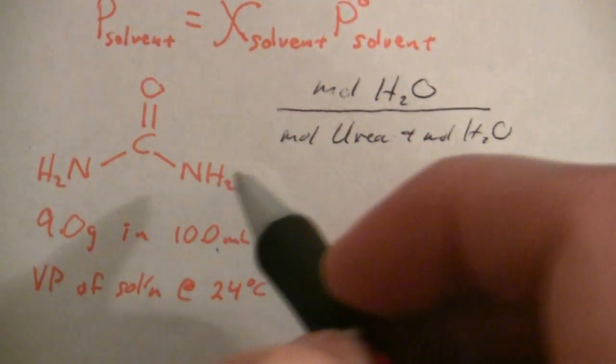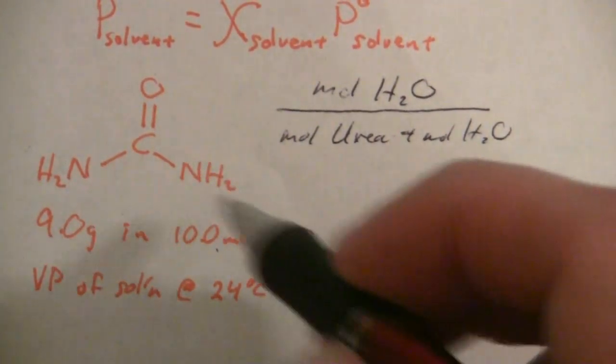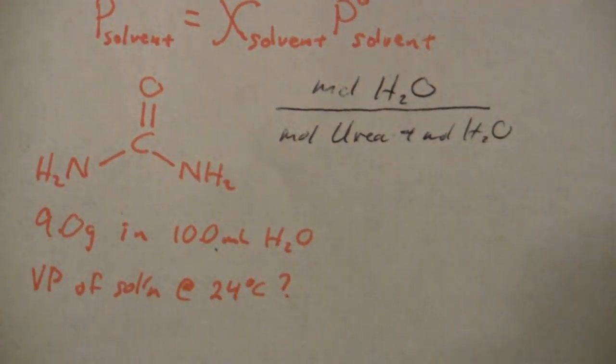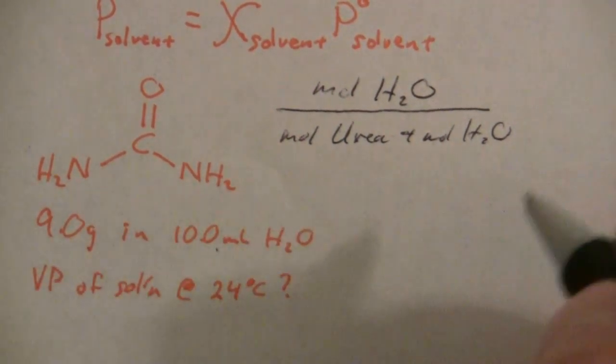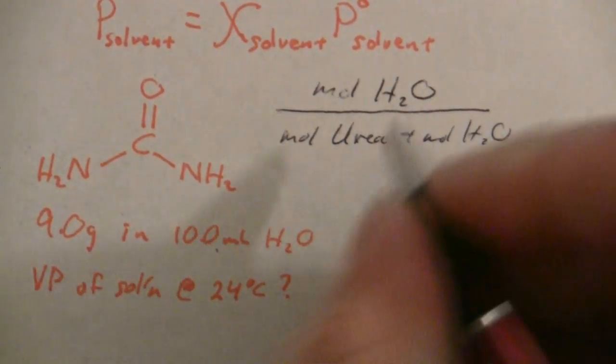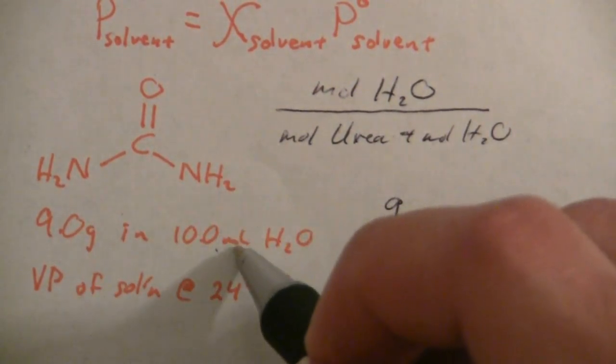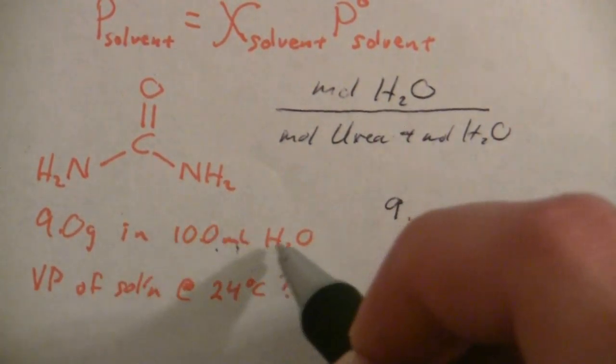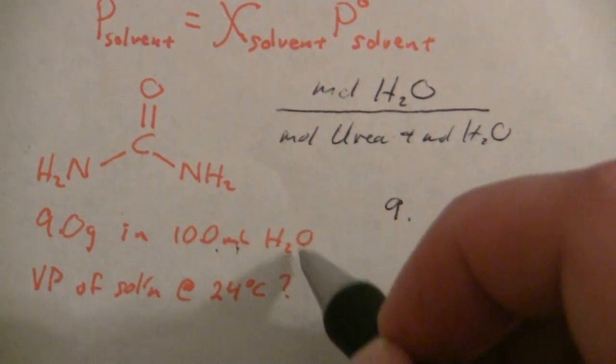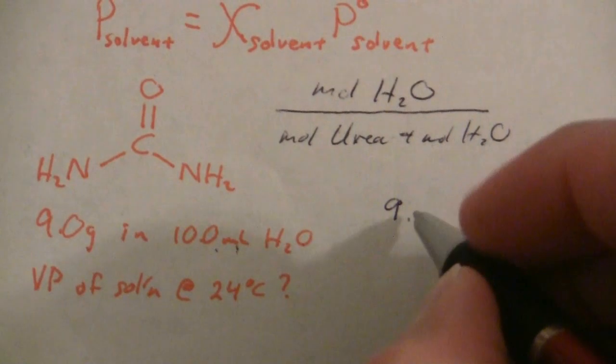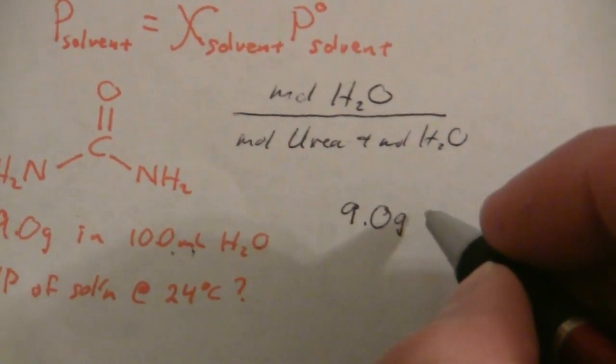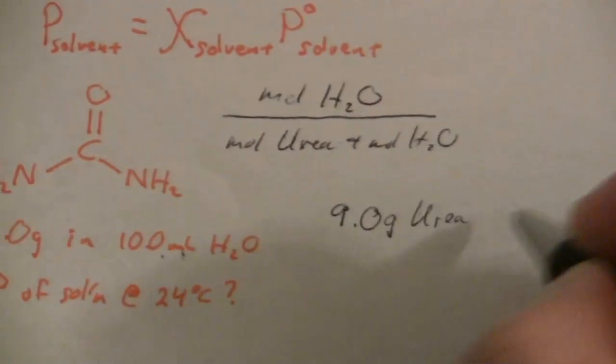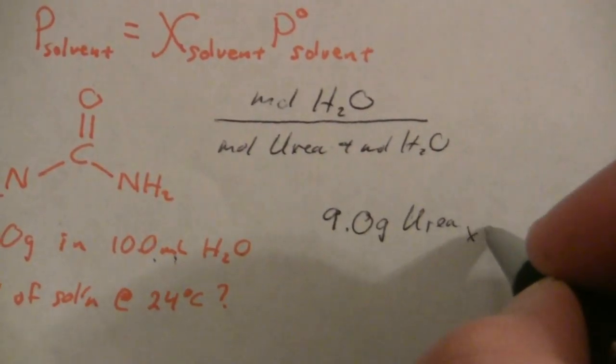This part isn't too difficult to find. We can convert the grams to moles. We have the formula—I've written it out in a structural formula—but we have two nitrogen, one oxygen, one carbon, and four hydrogen. So we can find the moles of urea from the nine grams. We have 10.0 grams of H2O at one gram per milliliter. We can convert both of those to moles to find the mole fraction.